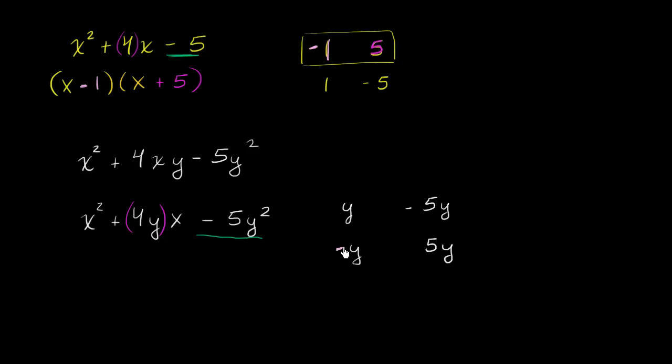This is the same exact idea as before. Here we factored into -y and 5y, where before we factored into -1 and 5. So instead of -1, it's -y. This gives us (x - y)(x + 5y).